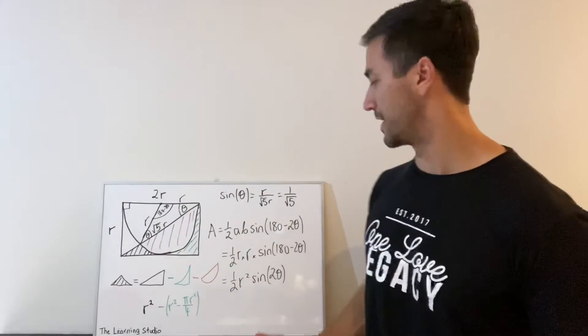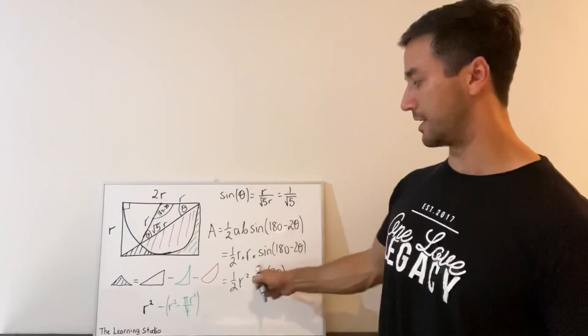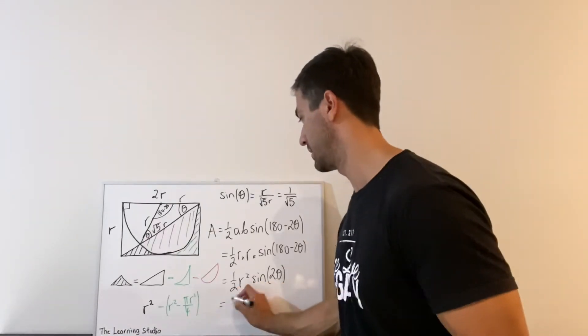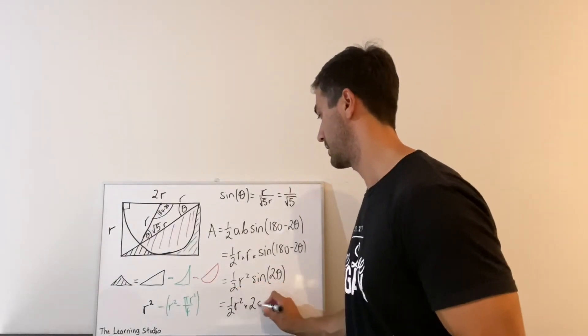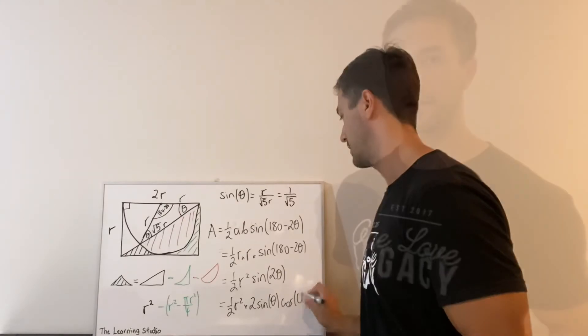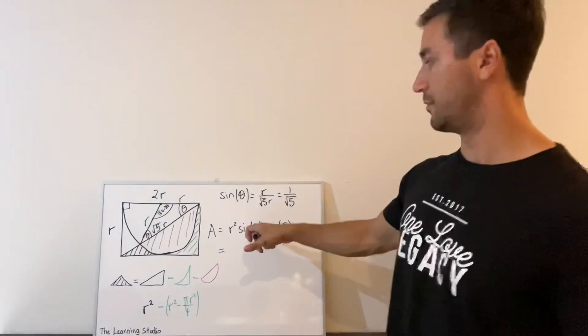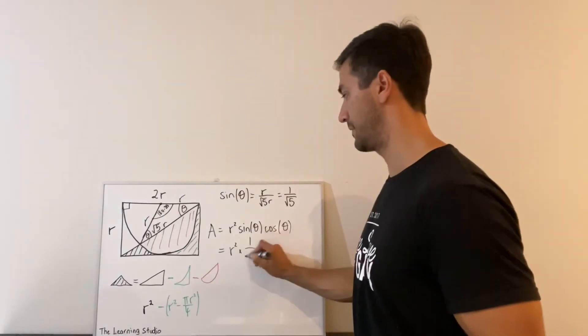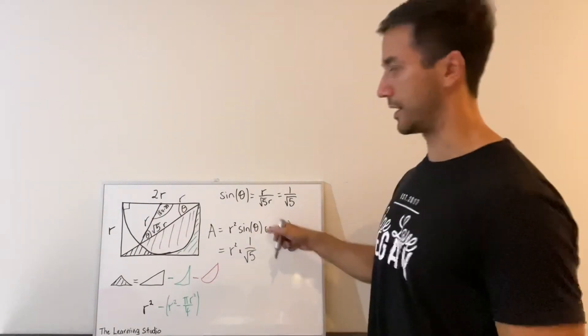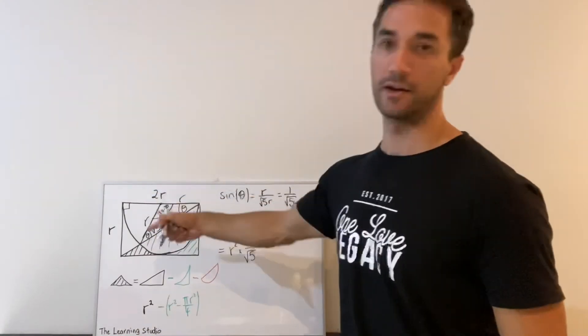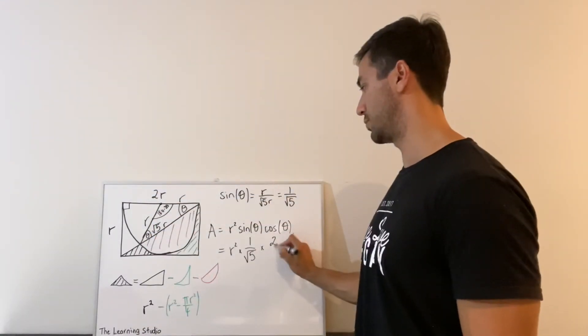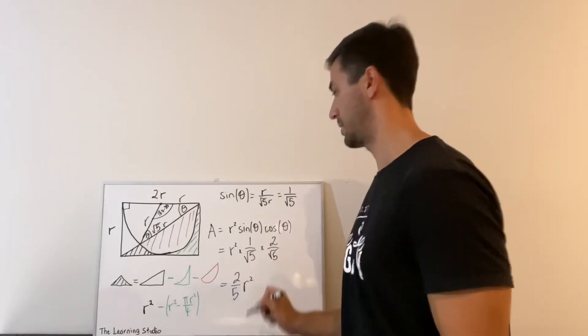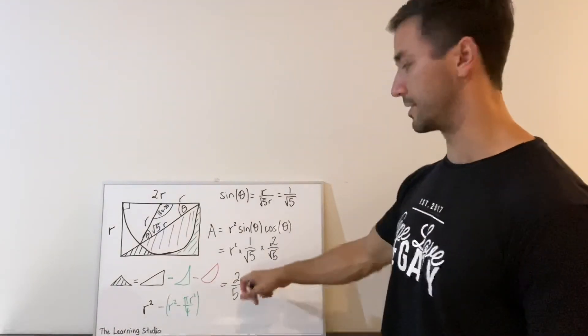Okay, and so the final thing that we are going to use here is the identity that tells us sine of 2 theta is really 2 sine theta times cos theta. So that simplifies to this. We know that sine theta is 1 on root 5 and cos theta is going to be 2r on root 5r, which is going to be 2 on root 5. And so we get that the area of the triangle is two-fifths of r squared.